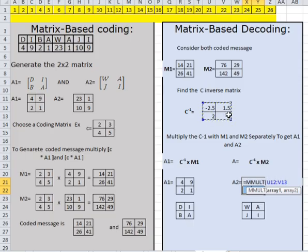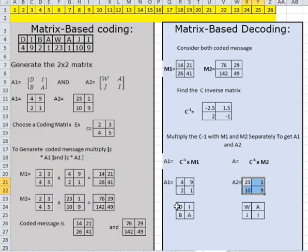Matrix multiplication: C inverse, comma, M2, Ctrl+Shift+Enter. This gives A2 — so 4 means D, 9 means I, 2 means B, and so on — whatever message I sent will be decoded. This is the procedure to do coding and decoding based on matrix multiplication. Hope you understand, thank you.